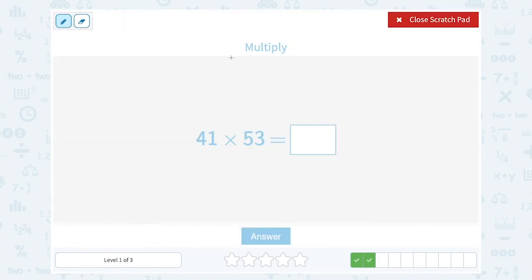41 times 53. Since they're both two-digit numbers, I'm going to line it up this way. 41 times 53. And first, I'm going to take that 3 that's in the ones place and multiply by both numbers. So 3 times 1 is 3. 3 times 4 is 12. So I get 123.